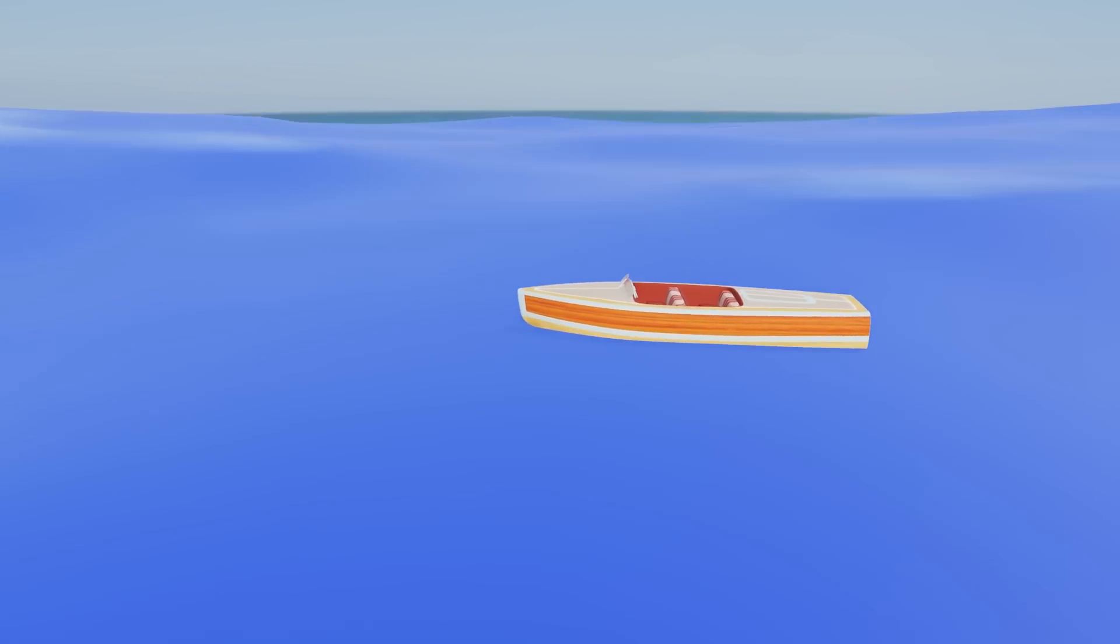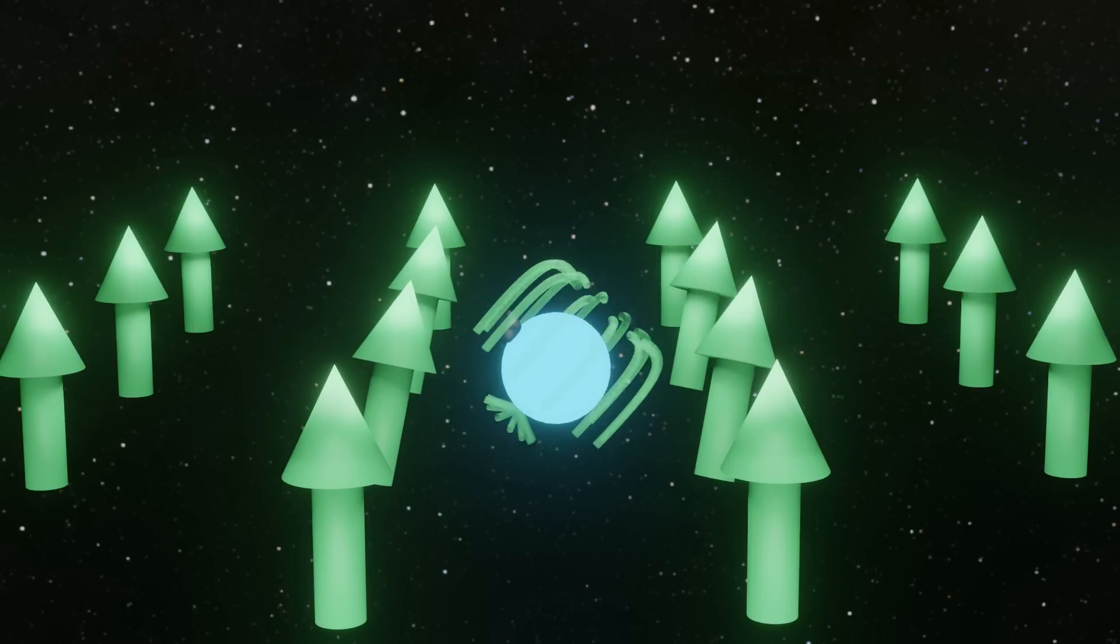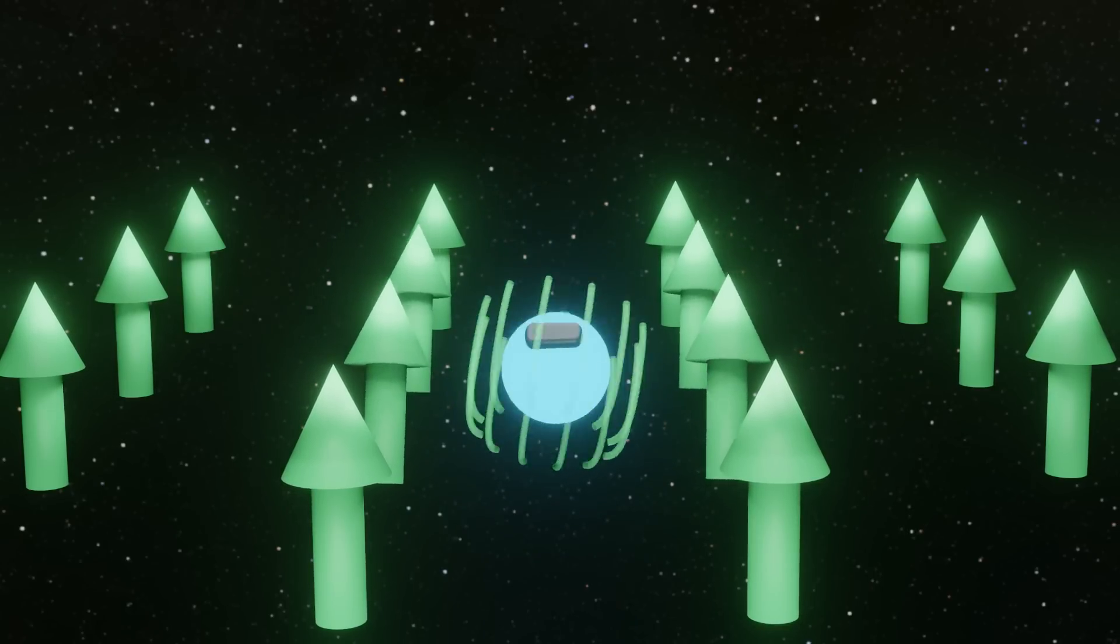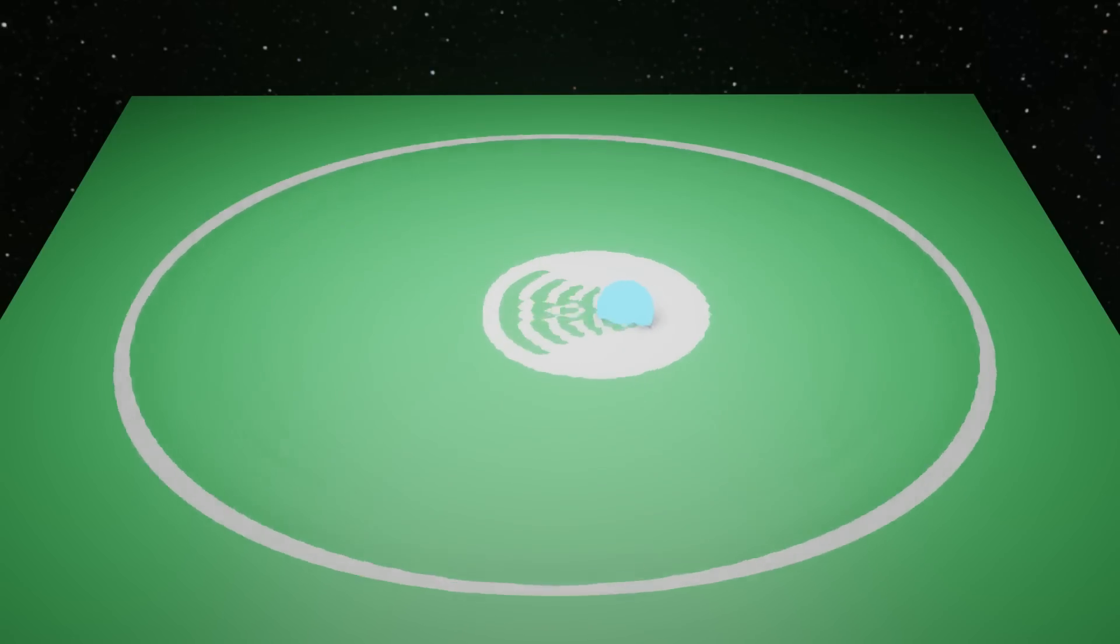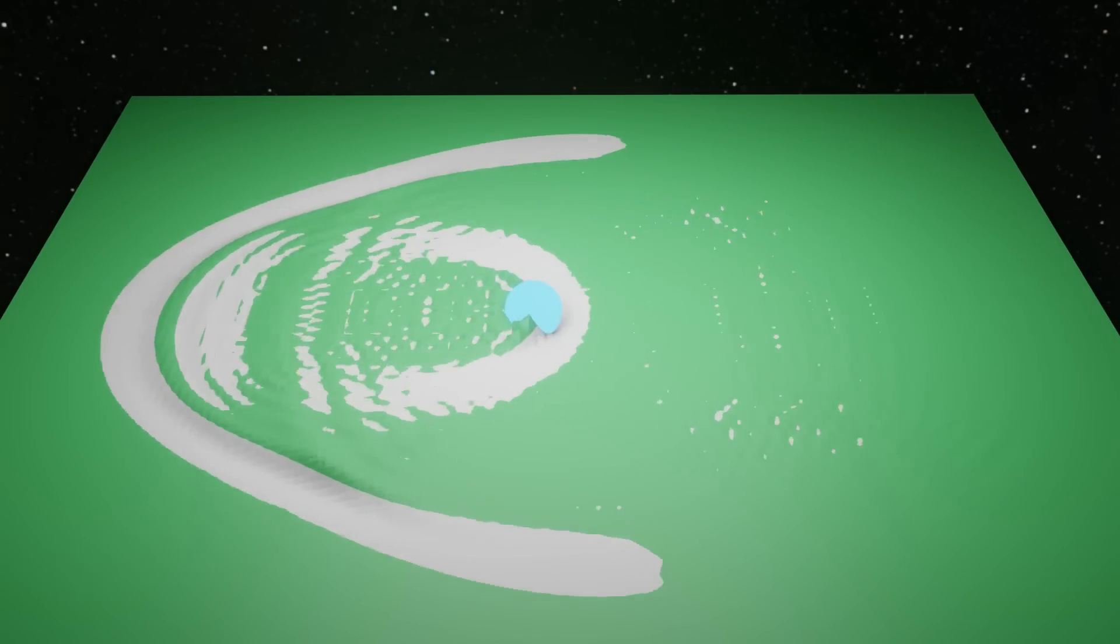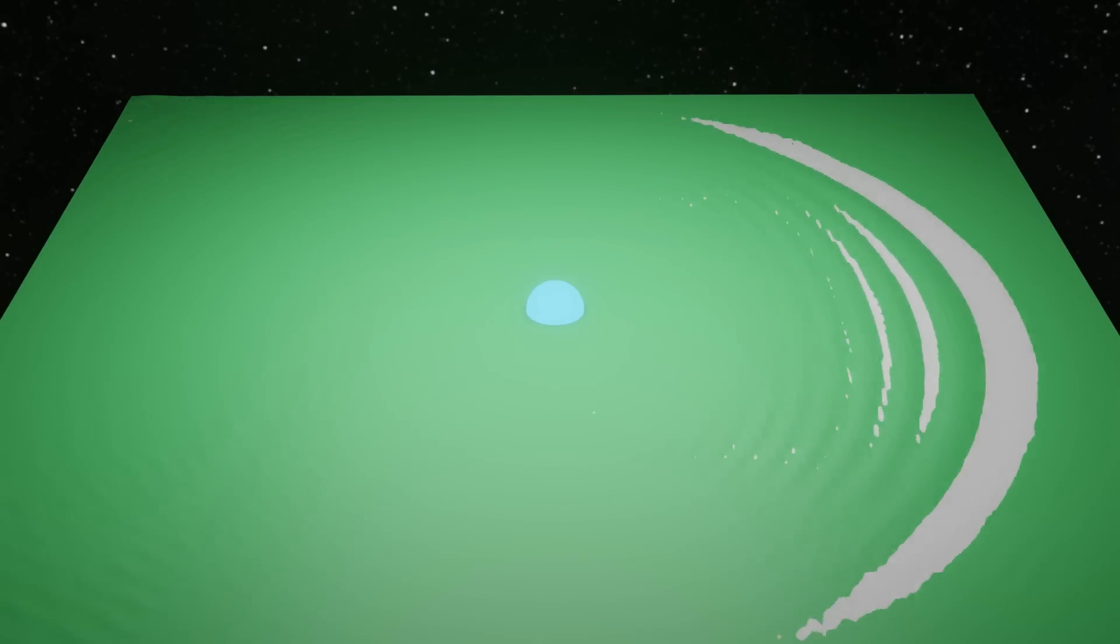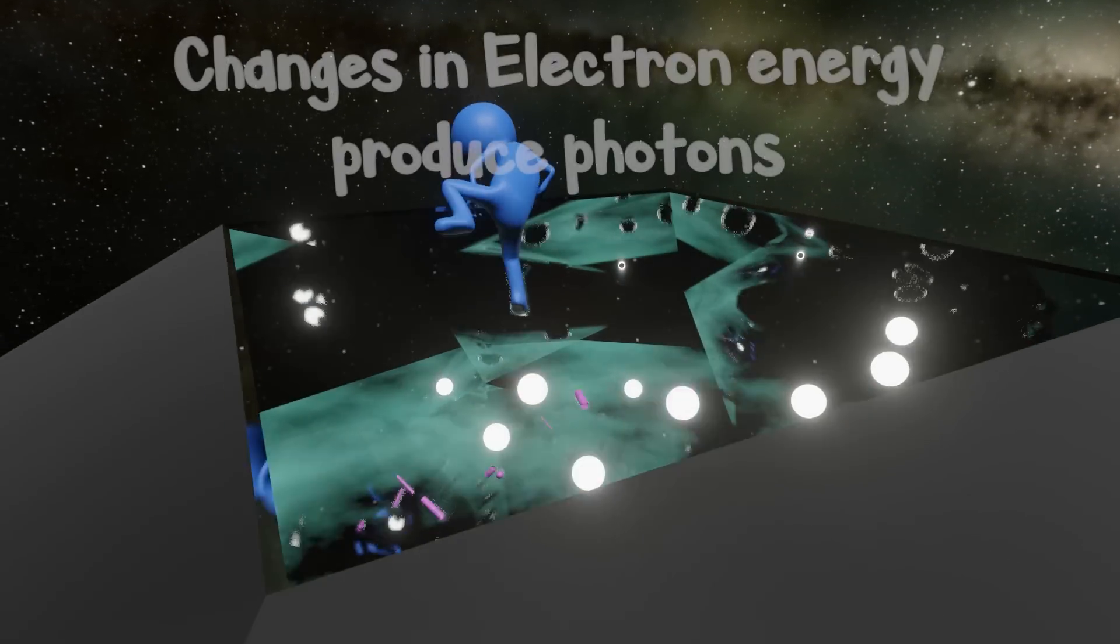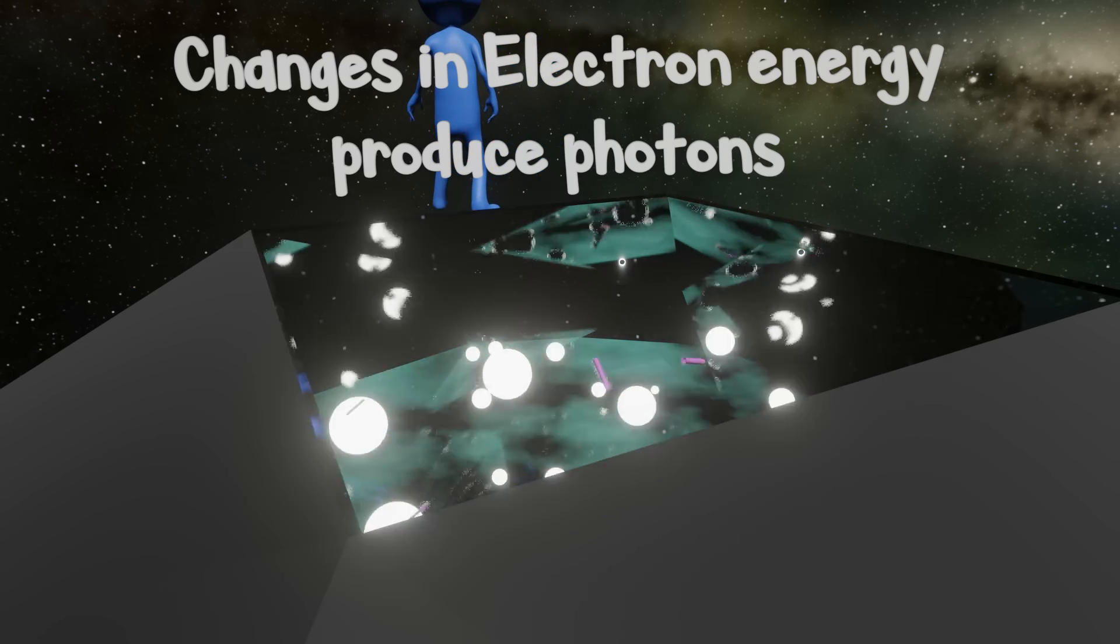Therefore, whenever an electron changes its own magnetic field, be that by changing its momentum or wave function, it sends ripples or photons through the electromagnetic field. That is to say, a change in energy of an electron will always produce a photon. As we leave the quantum world, we keep this little factoid in mind. Changes in electron energy produce light.